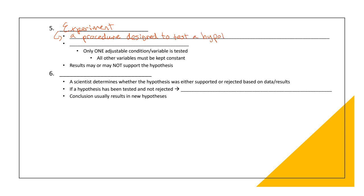Designed to test a hypothesis and verify predictions. When we run an experiment, what we really run is something called a controlled experiment. A controlled experiment is one where only one adjustable condition or variable has been tested. All of the other variables must be kept constant. But for right now, just know that when we run experiments, the experiments that we run are controlled experiments.